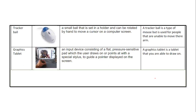Tracker ball: this is set in a holder and can be rotated by the hand in order to move the cursor on the computer screen. It is a type of mouse used by people who are unable to move their arms. Graphics tablet: an input device consisting of a flat pressure-sensitive pad which the user draws or points at with a special stylus to guide a pointer displayed on the screen — basically a tablet that you are able to draw on.